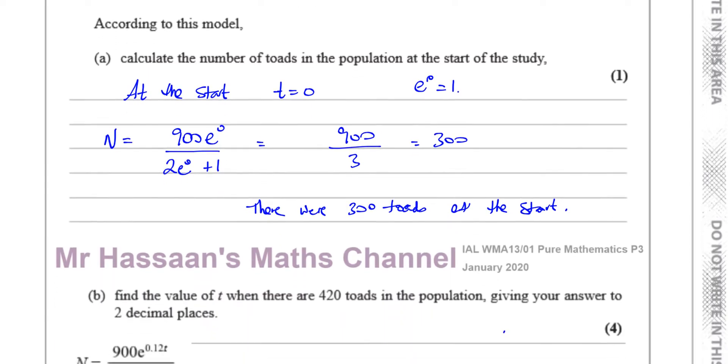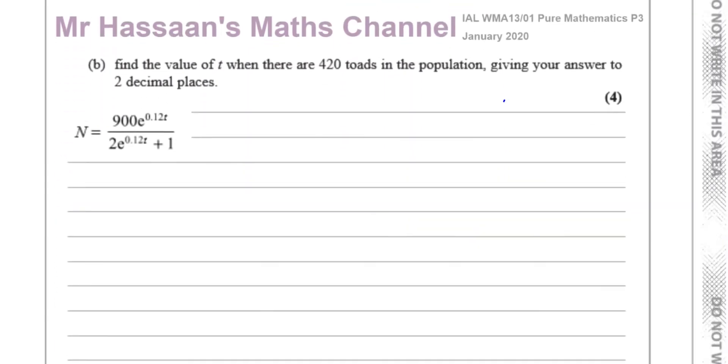Now part b says, find the value of t when there are 420 toads in the population, giving your answer to two decimal places. So we have to substitute instead of N, 420. So we have 420 equals 900 e to the power of 0.12t over 2 e to the power of 0.12t plus 1. So we need to solve this equation for t.